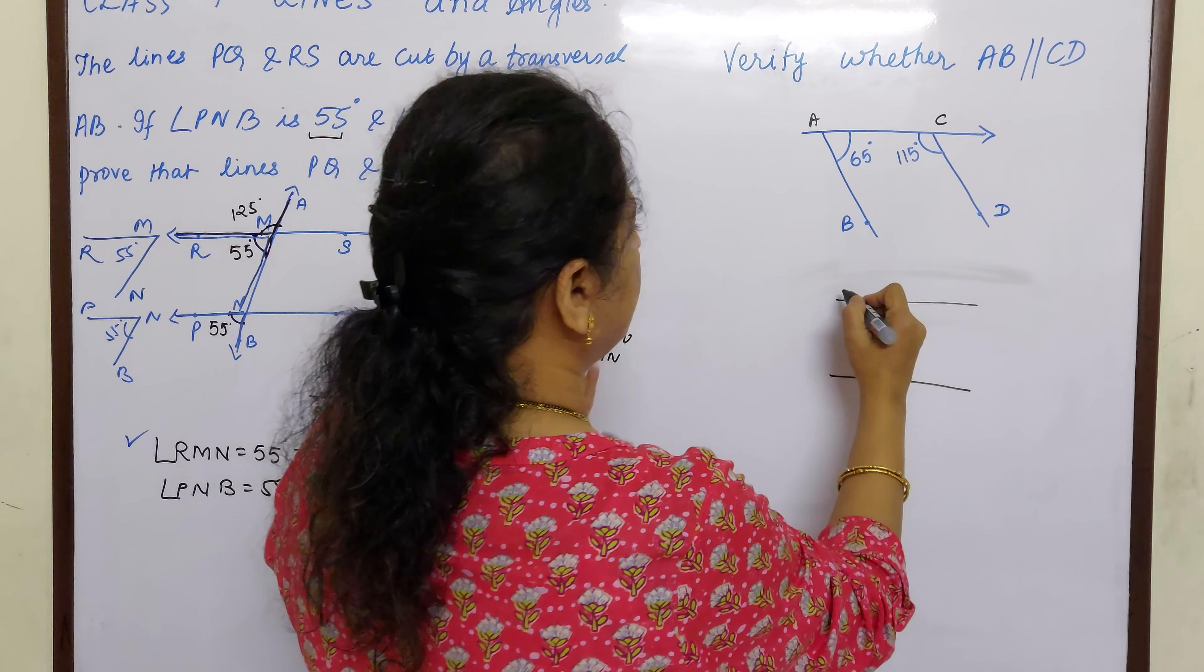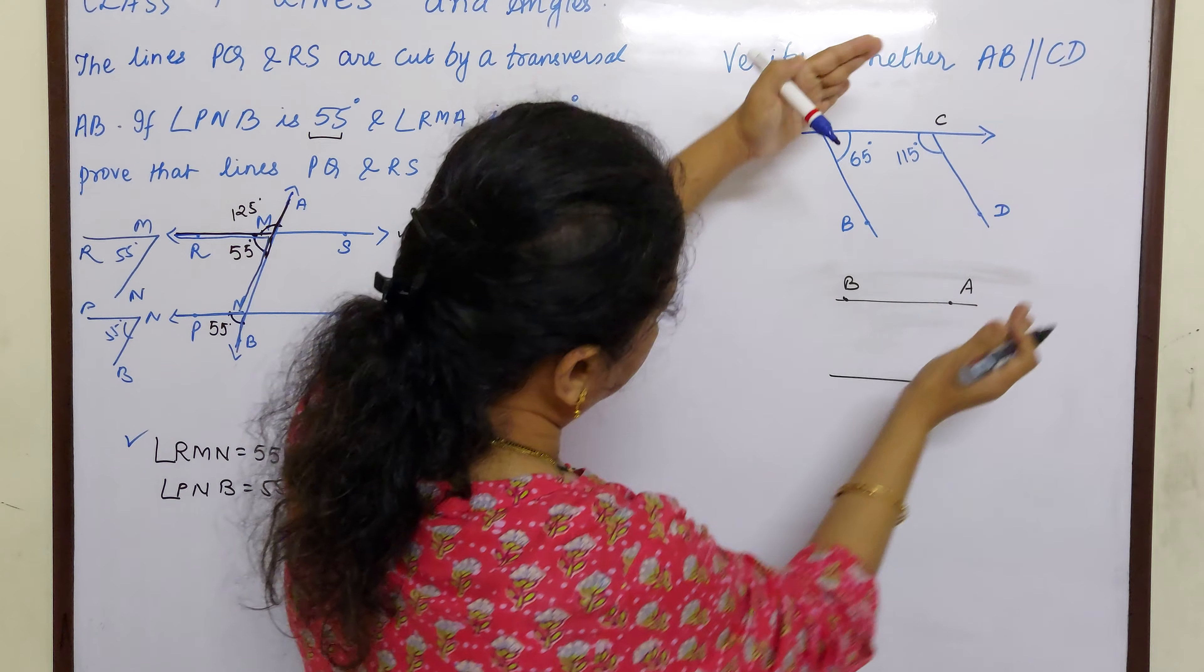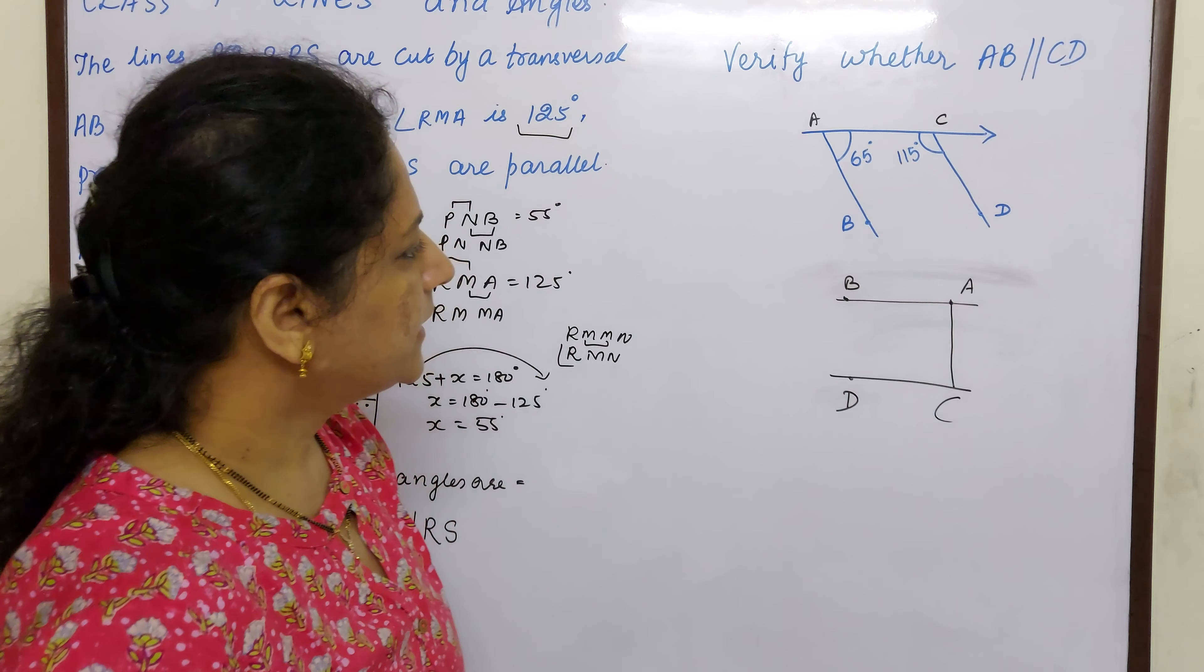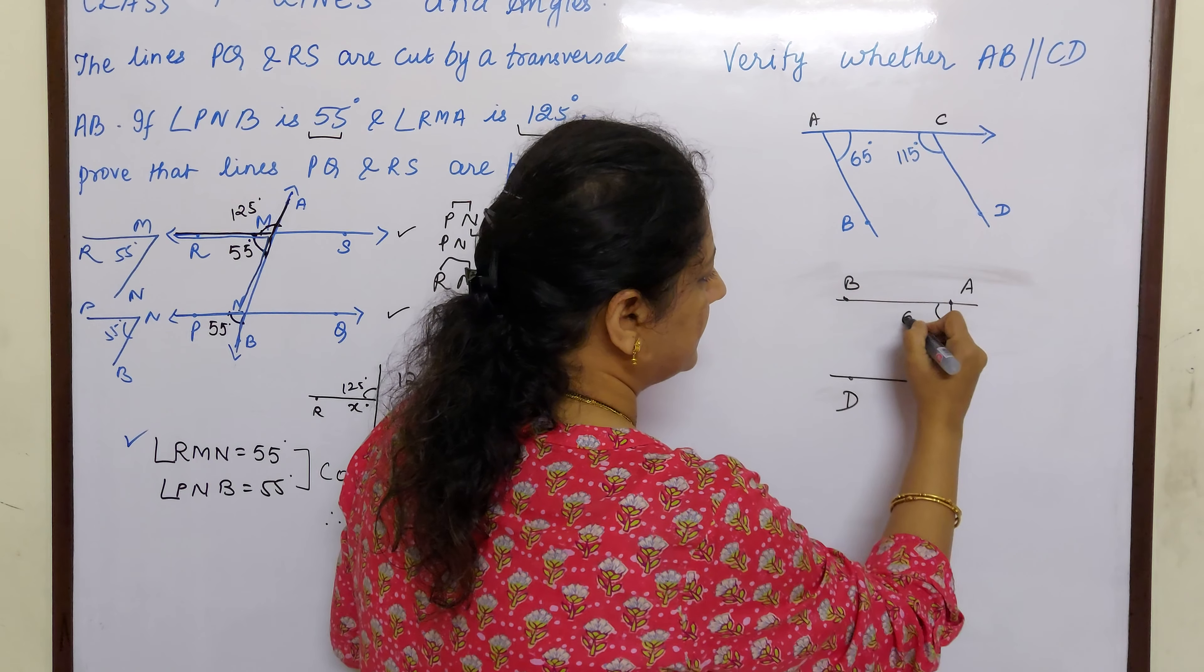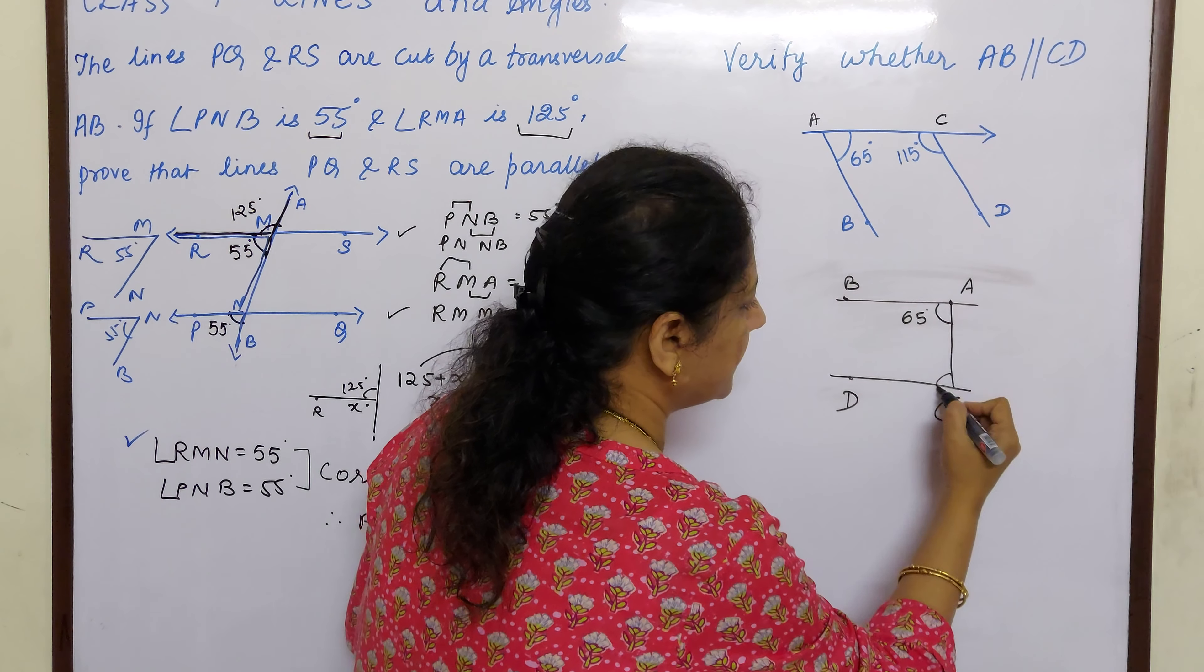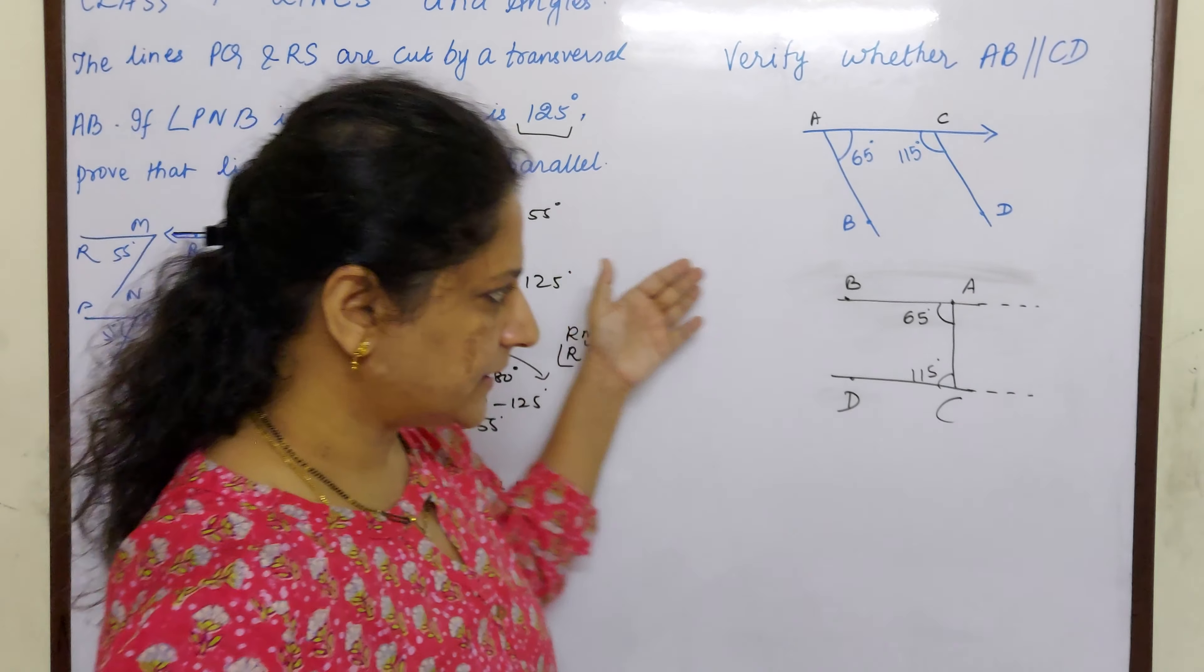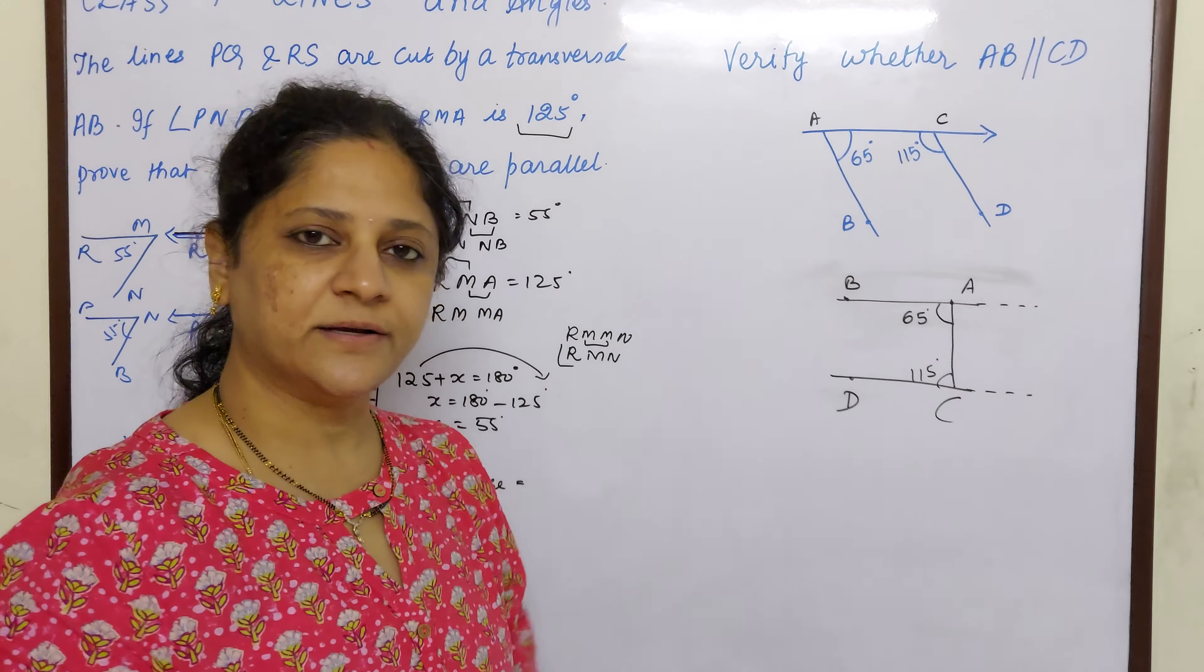So B, A. This will form B, A. And C, D. No, D, C sorry. And AC will come like this. Okay. Now what is A children? A is 65 degrees. And what is C? C is 150 degrees. So let us extend this line. We have not yet proved. We are just assuming that AB is a line. And CD is a line. And AC is the transversal cutting.